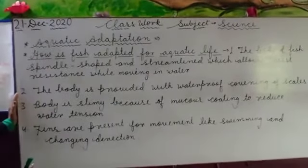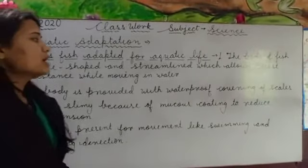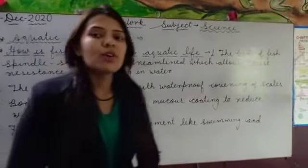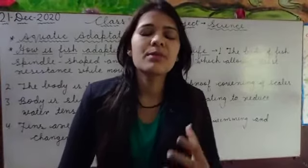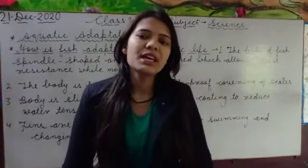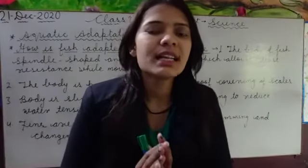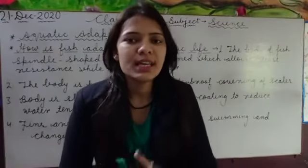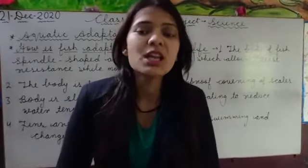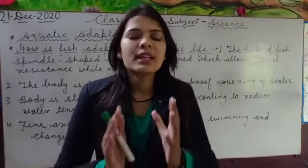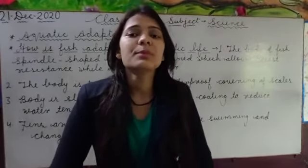The second point is that the body is provided with a waterproof covering of scales. You know that the outer side of the body of the fish is covered by scales, and this covering is waterproof.